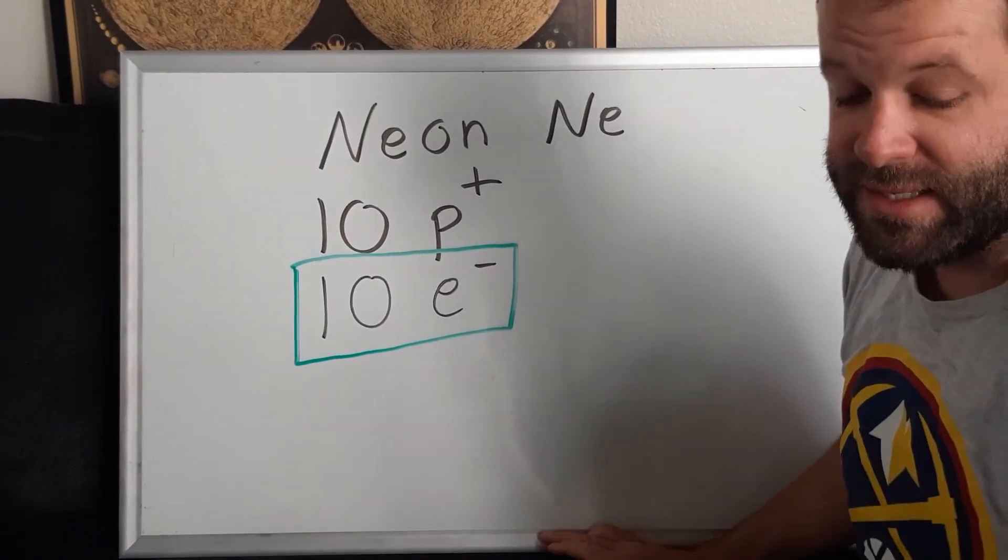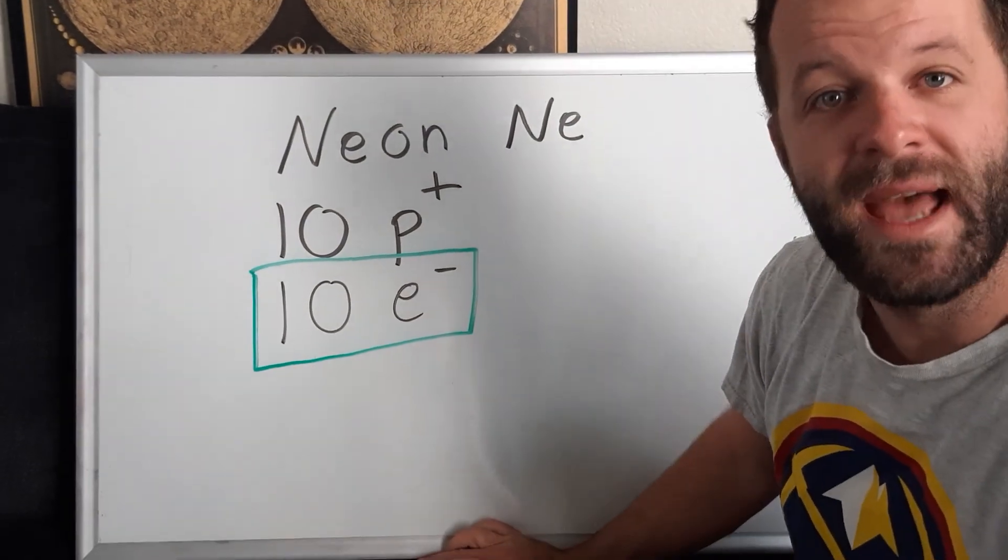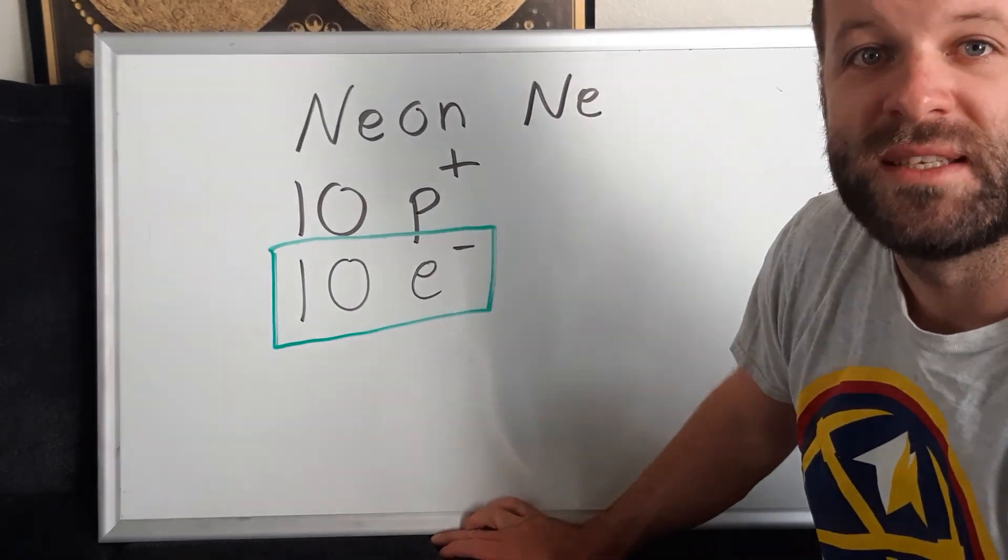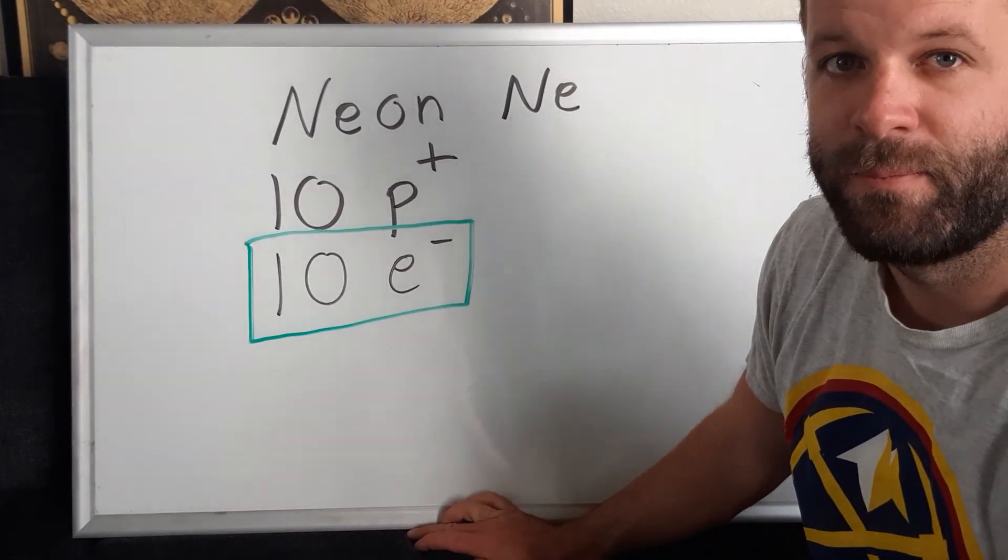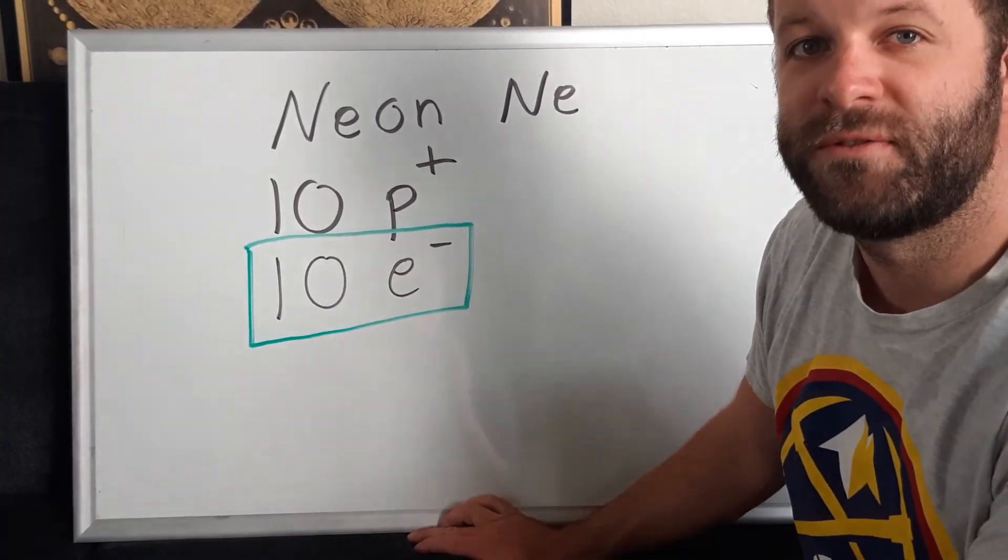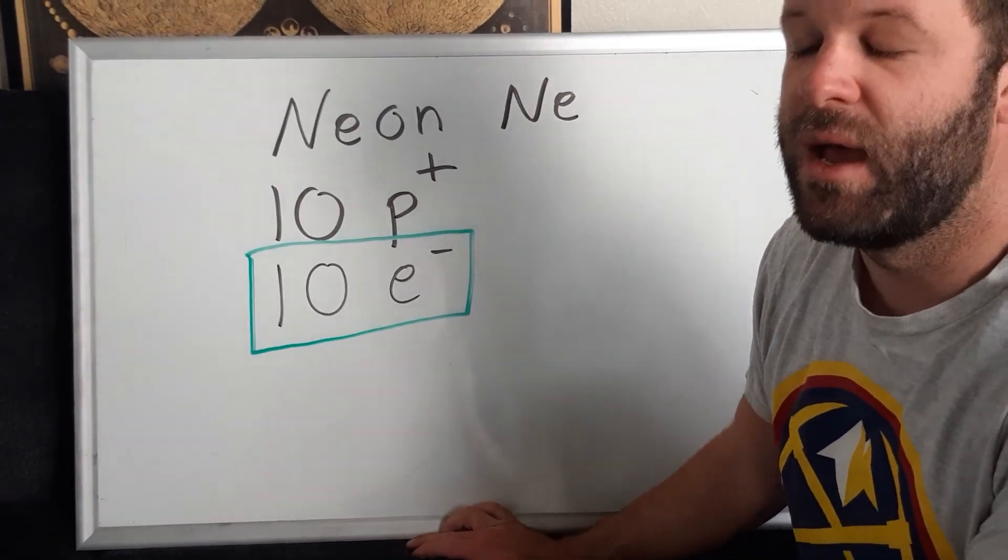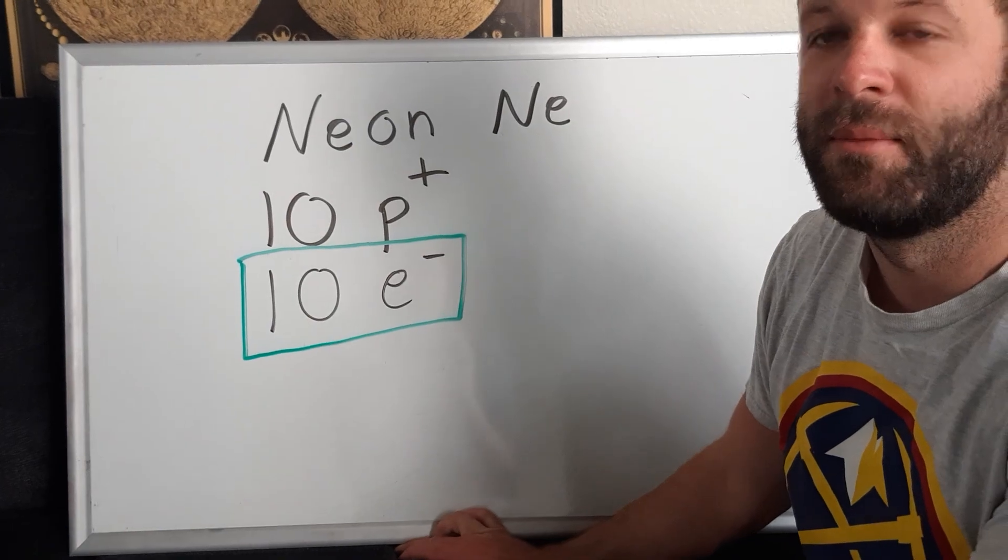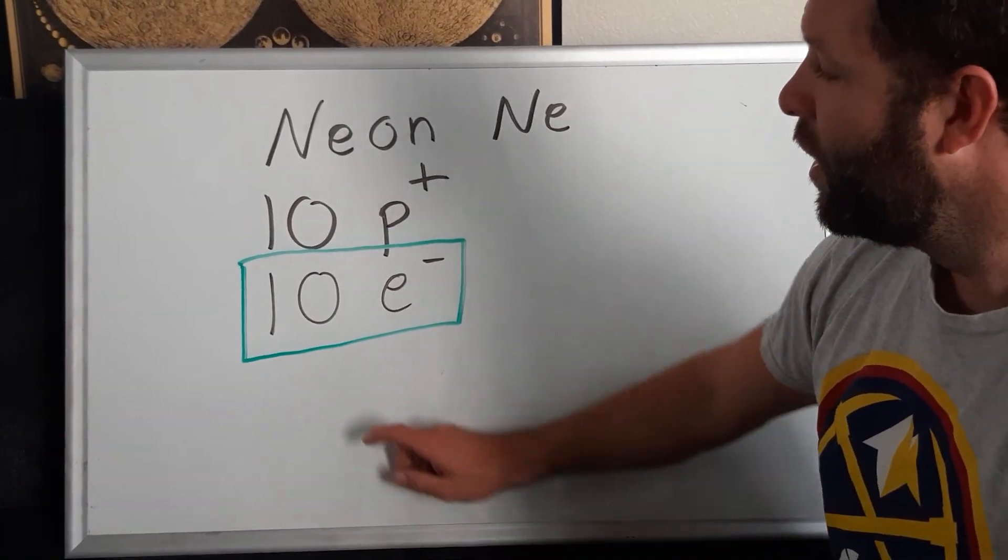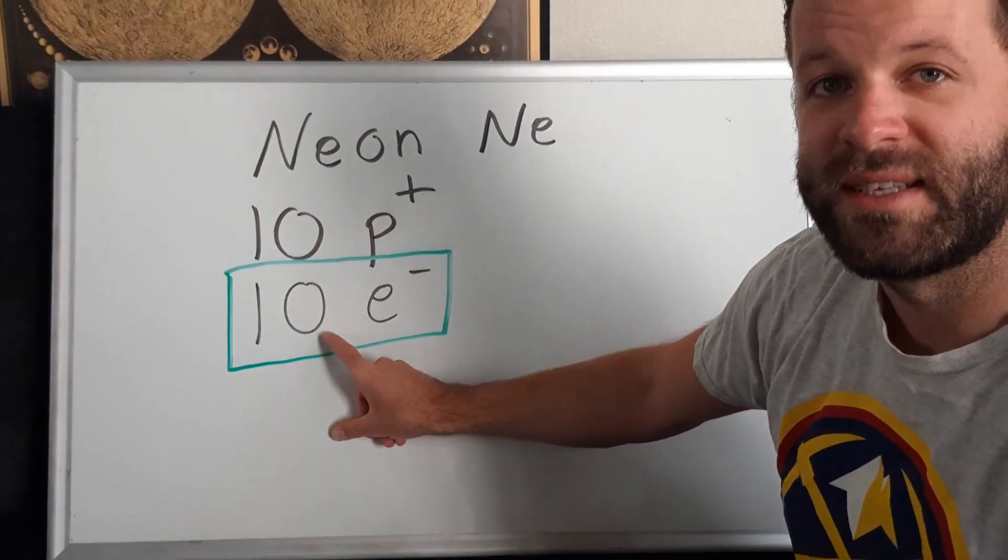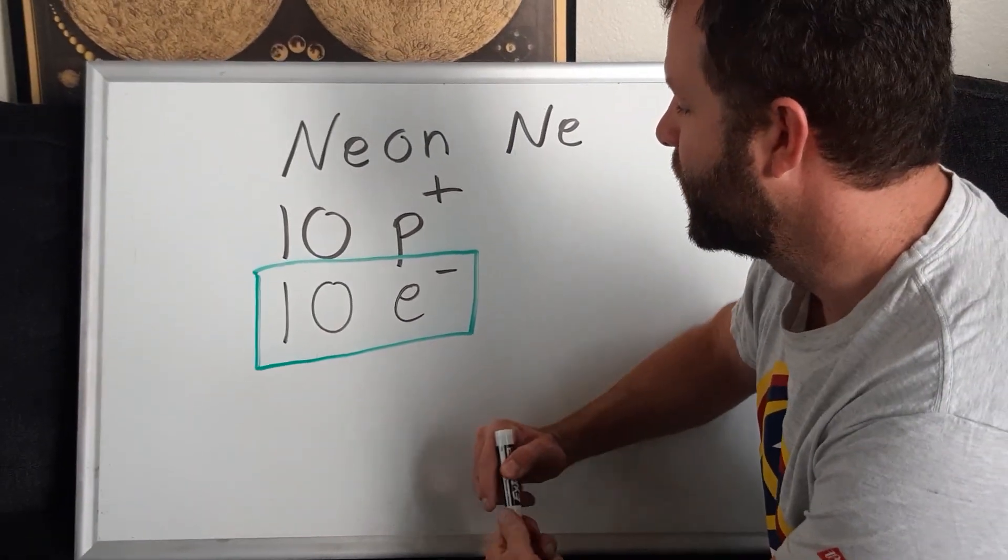Now these 10 electrons, they have to exist somewhere in the atom, right? And we've talked before about where these electrons exist in an atom. They exist in these well-defined orbitals and energy levels around the nucleus of our atom. So we want to figure out the places where these 10 electrons exist in.